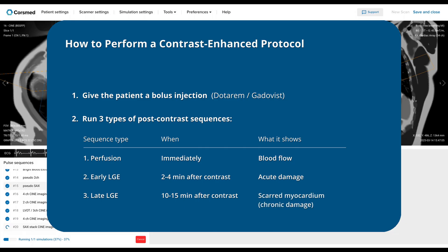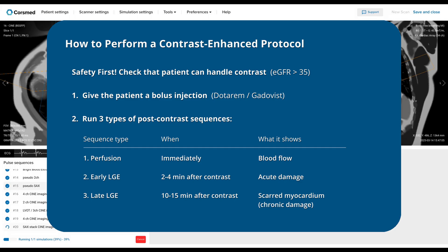But before any of this, we must always check if the patient can handle a contrast injection. Their eGFR needs to be above 35, but check your hospital's specific cutoff. If their kidneys can't handle it, we should either do tissue characterization without contrast or end the exam. This full contrast protocol takes about 20 minutes in total. The patient will need to hold their breath multiple times, so for sick patients, make sure to take breaks between sequences.